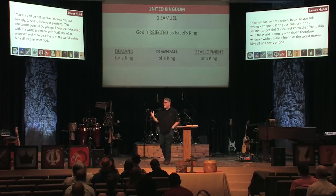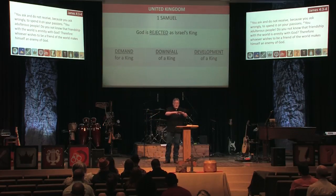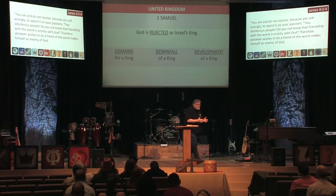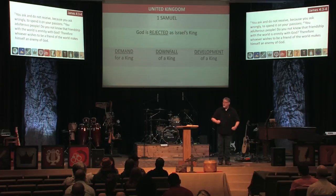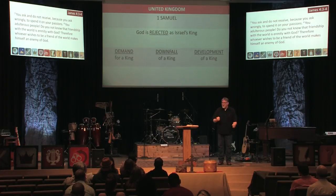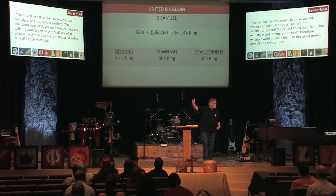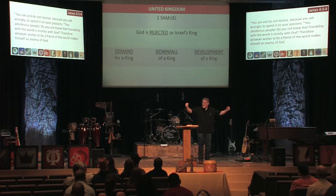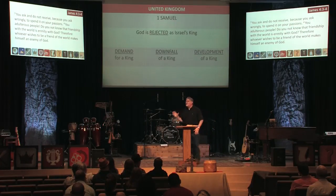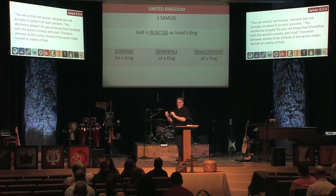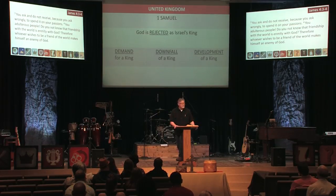The same thing happens again: David sees Saul and all his men camped out, sneaks into the camp while they're sleeping, and takes Saul's water jug and javelin. He could have killed Saul right then, as his men encouraged him to do, but he doesn't. He cries out from the mountaintop and says, 'Here's your water jug, here's your spear — I could have killed you.' But he says, 'I will not lift my hand against the Lord's anointed.' This is the development of a king whose heart is after God.